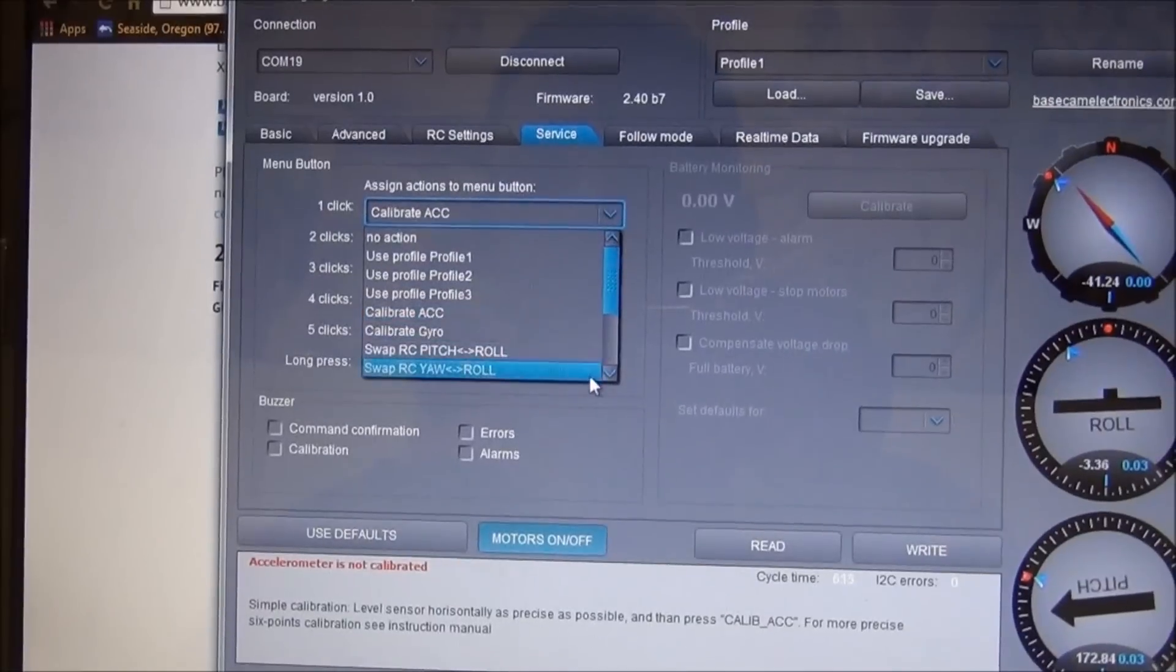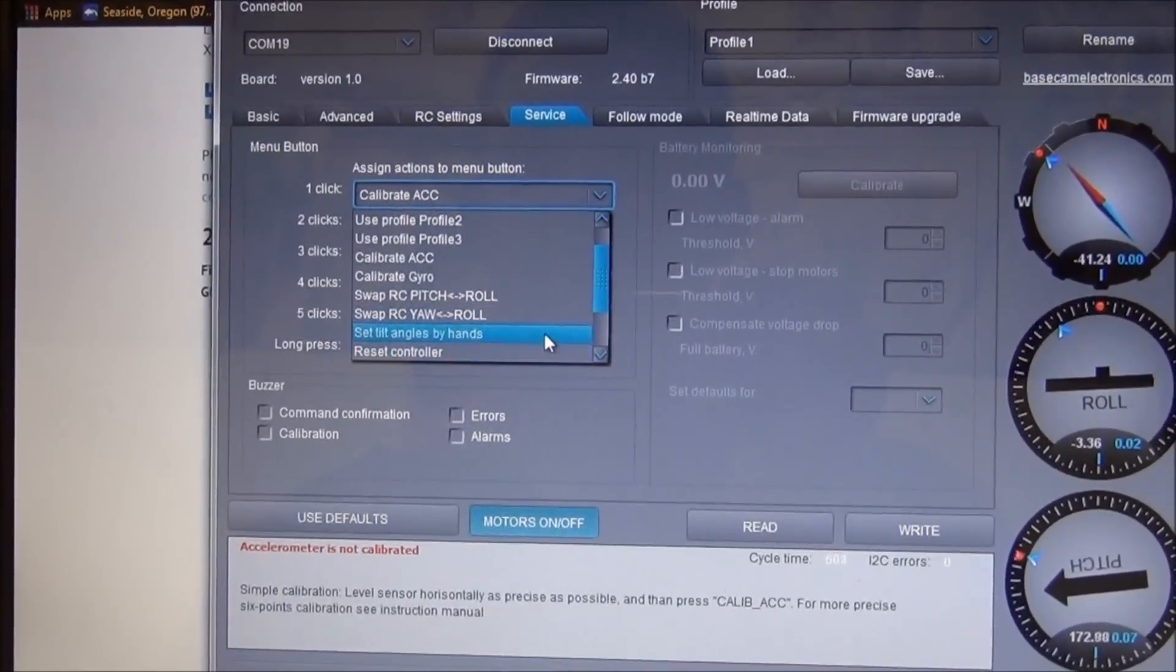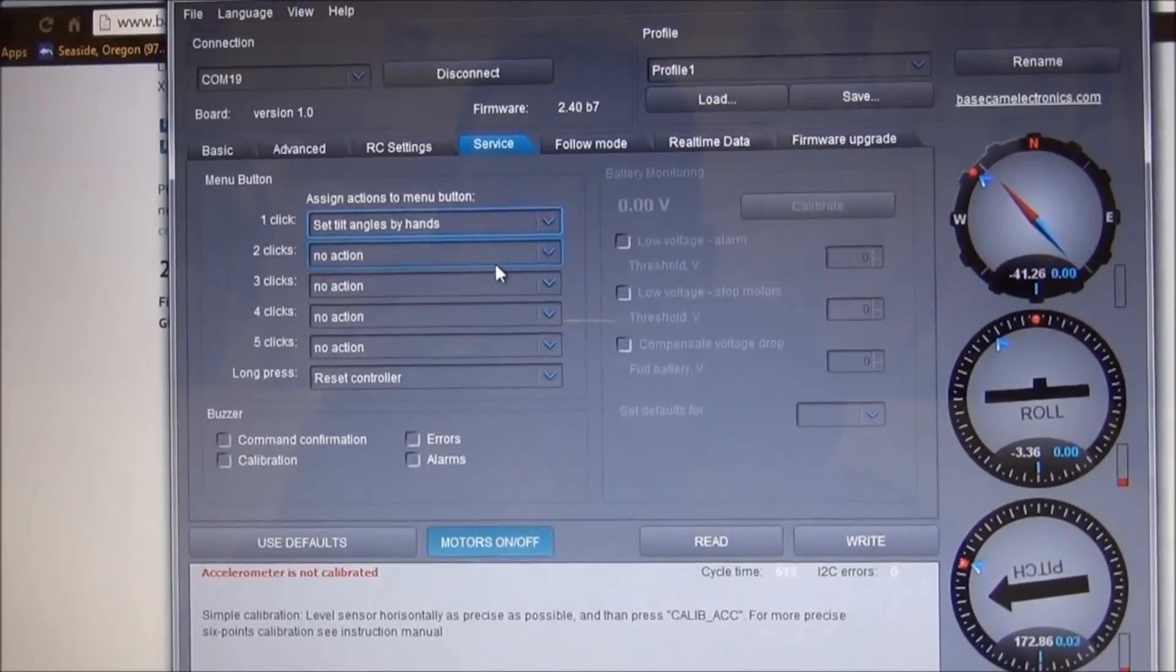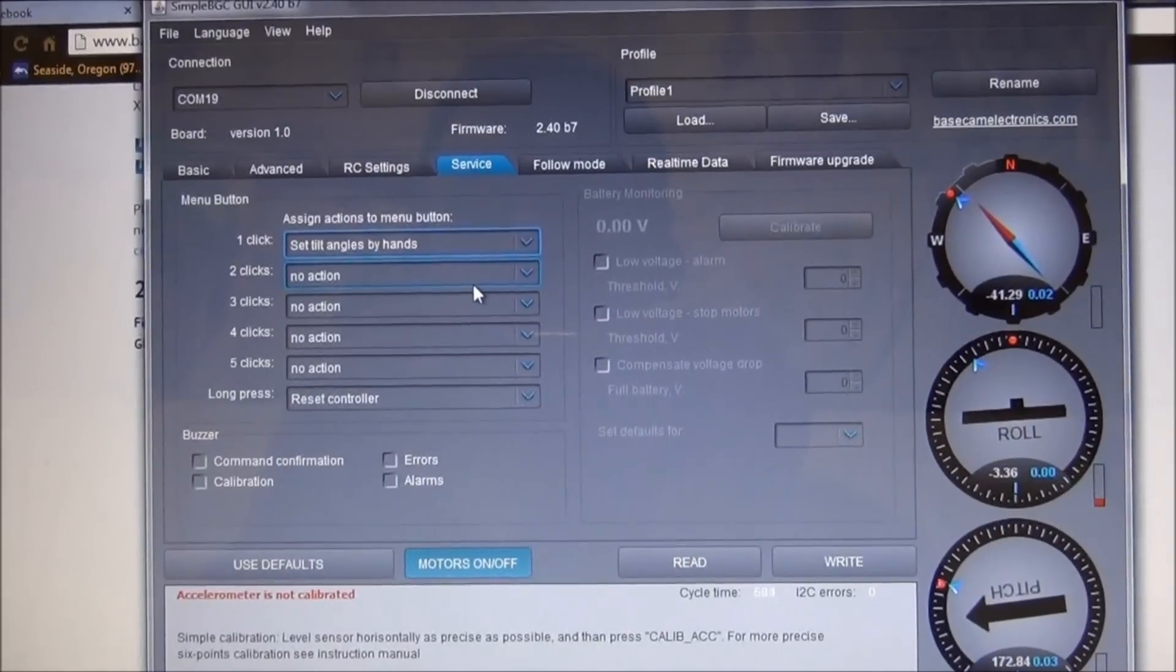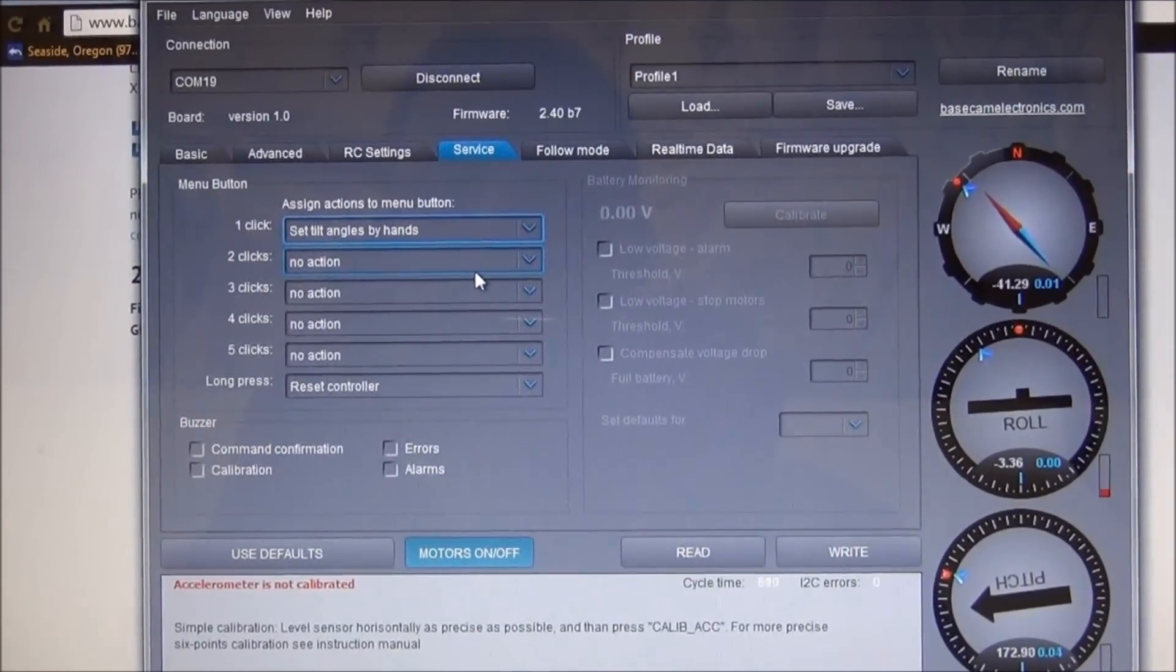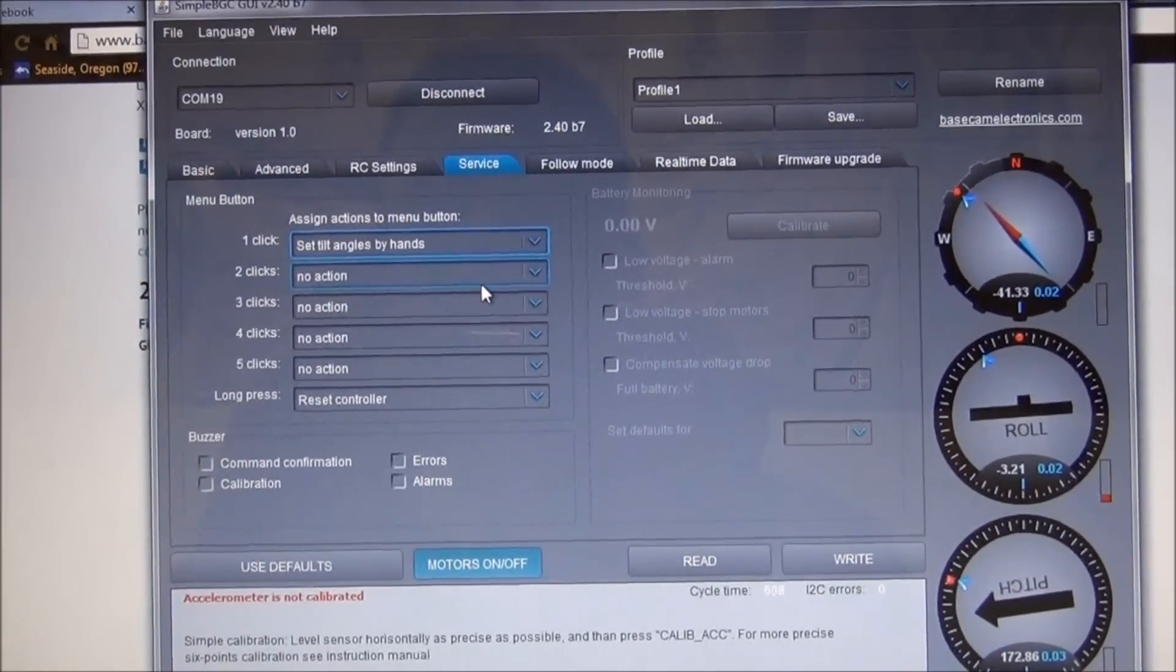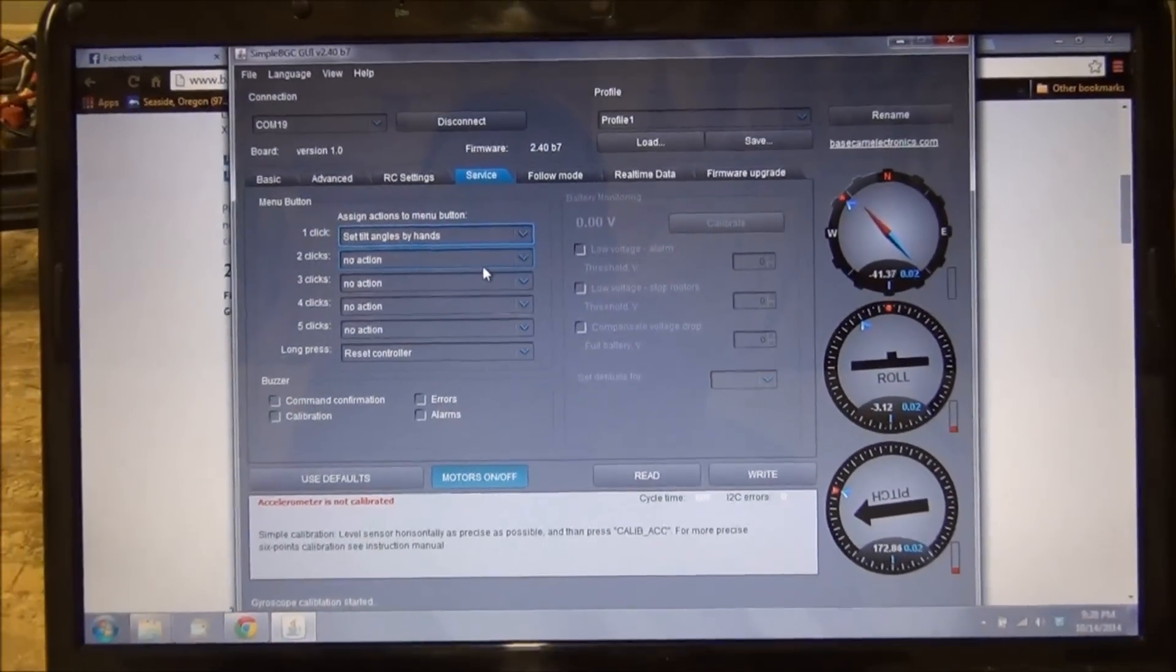What I actually like to do is select set tilt angles by hands. What you can do then is you can depress that button. It powers down the motors for a couple of seconds, and then you can hold the gimbal where you want it. And when the motors power back on, it'll remember wherever you've been holding it. I found that really handy.